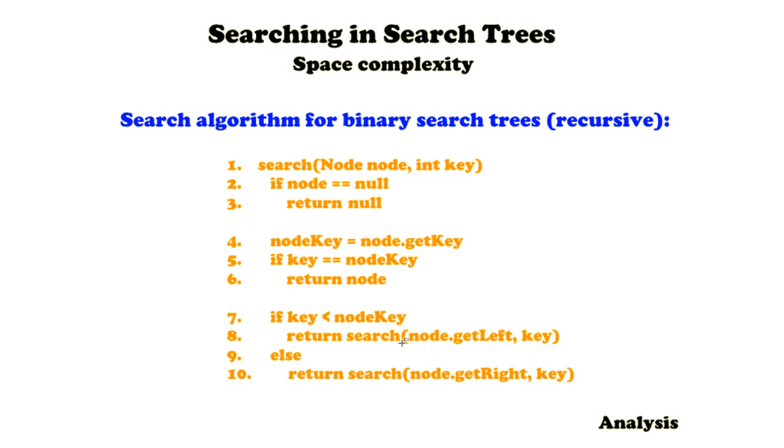If the key is smaller than nodeKey, then we're going to perform a recursive call with search and we're going to add the left node to the current node and perform the recursive call together with the key. If this doesn't hold, so key is actually greater than nodeKey, then we're going to do a recursive call with the node right to the current node.